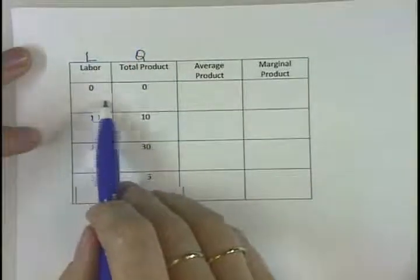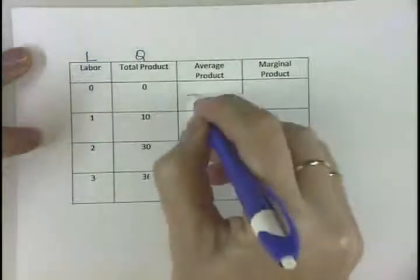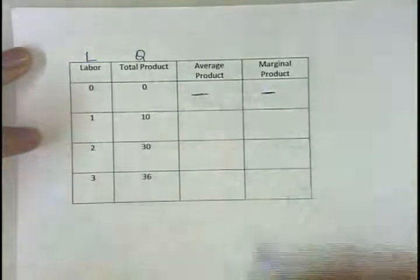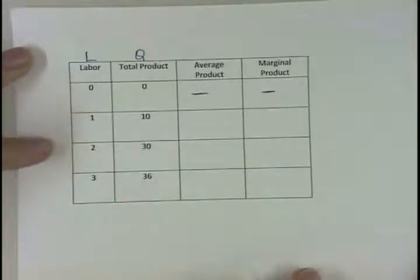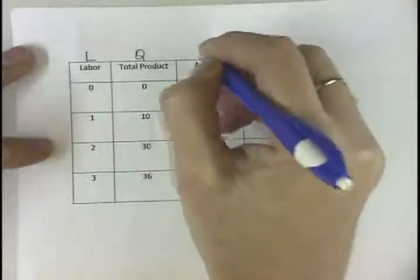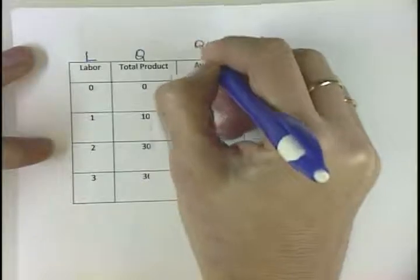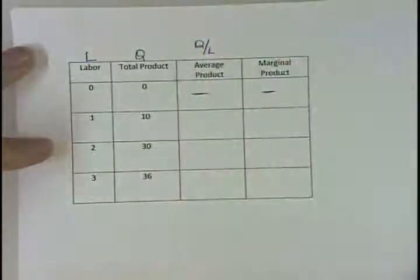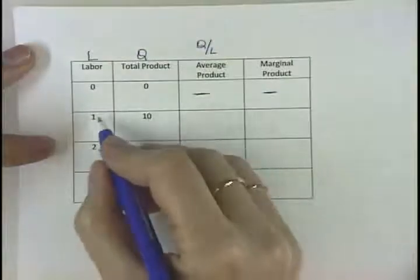So what we're going to do is figure out our average product and our marginal product. We don't have one for zero product, so we'll just put little dashes in there. Average product of labor is going to be the quantity produced divided by the amount of labor that we have — we're going to take this Q value and divide it by the L.